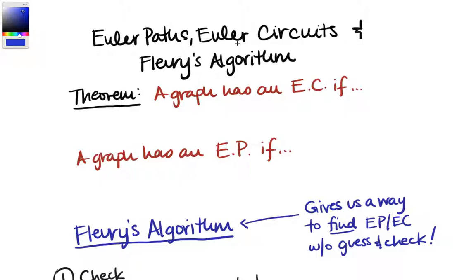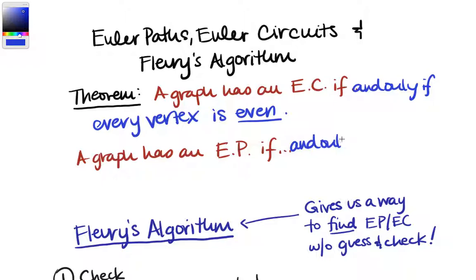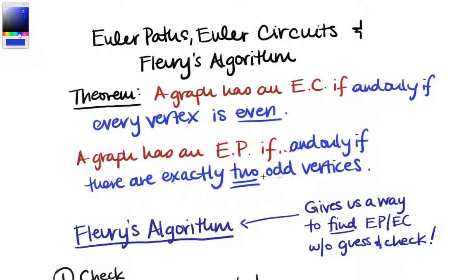Euler's theorem tells us that a graph has an Euler circuit if and only if every vertex is even, meaning every vertex has an even number of edges going into it. And a graph has an Euler path if and only if there are exactly two odd vertices. So all even vertices has an Euler circuit, only two odd vertices has an Euler path. If there's one odd vertex or more than two odd vertices, there's neither an Euler path nor an Euler circuit.